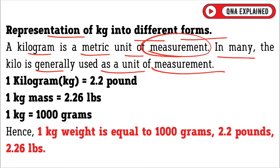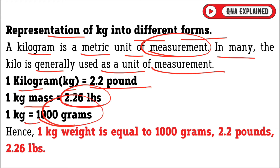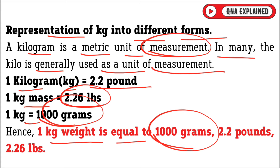1 kg, denoted as kg, is equal to 2.2 lb, or 2.26 lbs. 1 kg is also equal to 1000 g. Hence, 1 kg weight is equal to 1000 g, 2.2 lbs, or 2.26 lbs.